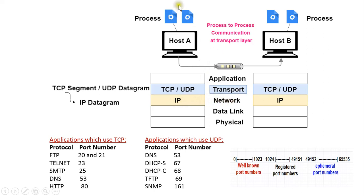Transport layer provides process-to-process communication. Whenever an application is run at the application layer, a process is generated. When several applications are run at the application layer, a number of processes are generated. The transport layer always transmits the information from one process to another — these processes can be server processes or client processes.